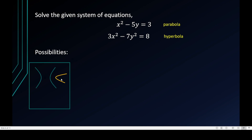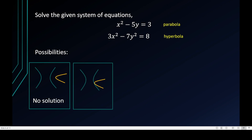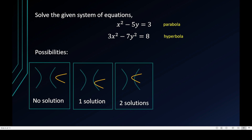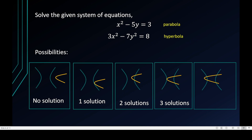There are several intersection possibilities: the parabola and hyperbola may not intersect at all, giving no solution; the parabola could be tangent to the hyperbola giving one solution; intersecting twice on one side gives two solutions; tangent on one side and intersecting twice on the other gives three solutions; and if the parabola intersects both sides twice, we expect four solutions.